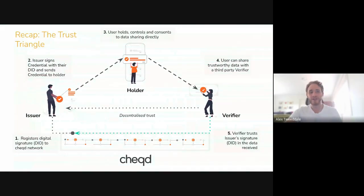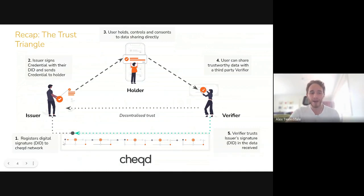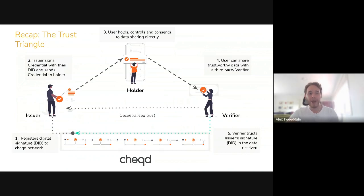Before we jump into the good stuff, let's do a quick recap on the trust triangle and what we're really building here in terms of the identity functionality. A core bit of information to understand is that in order for any credentials to be issued, an issuer needs to register their digital signature — called a decentralized identifier — on the Check network. Using this signature, they can sign credentials, which are like a new format of data. These credentials can then get sent off-chain to the holder, who can hold them in a digital identity wallet or a crypto wallet, kind of like NFTs — they sort of sit with you, you hold them unilaterally.